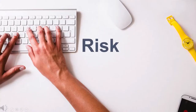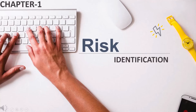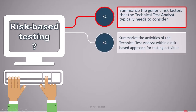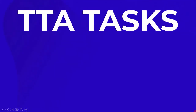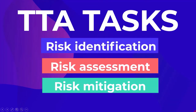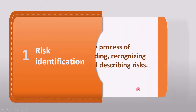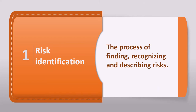In this lecture, we will cover Risk Identification. The learning objective here is to summarize the generic risk factors that the Technical Test Analyst typically needs to consider, marked as K2. Risk Identification is defined as the process of finding, recognizing, and describing risks. The Risk Identification process is most likely to detect the largest possible number of significant risks.